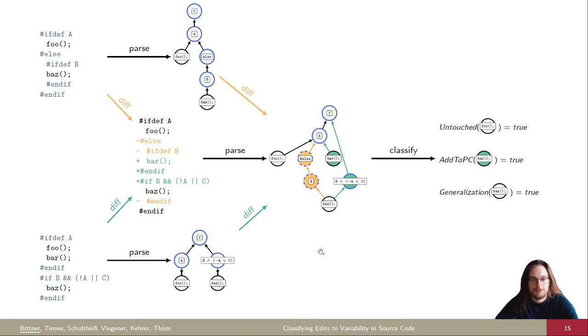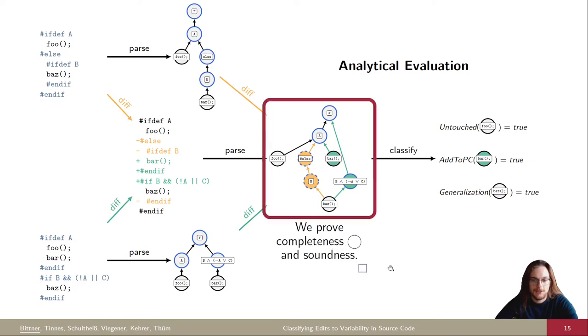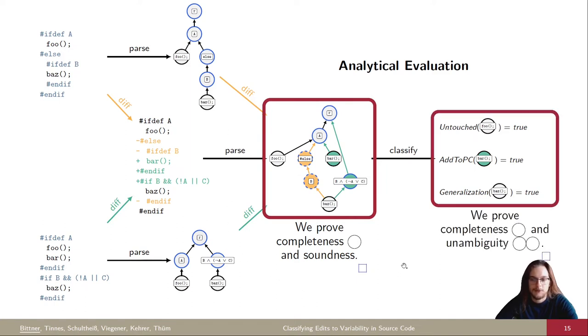So now we have our classification, but our goal was not just to have a classification, but also show that it's complete and unambiguous. So that's why we perform an analytical evaluation. First we prove that variation diffs are a complete and sound model for edits to variability in source code. In particular, they're complete and sound with respect to edits to variation trees. And second, we prove that our classification is complete and unambiguous. So in combination, we see that our classification is complete.